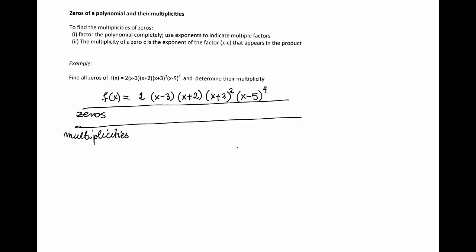I have multiple factors of the form x minus c, and therefore I will have multiple zeros. I will go factor by factor and find out the zero of that factor and the multiplicity of that zero.